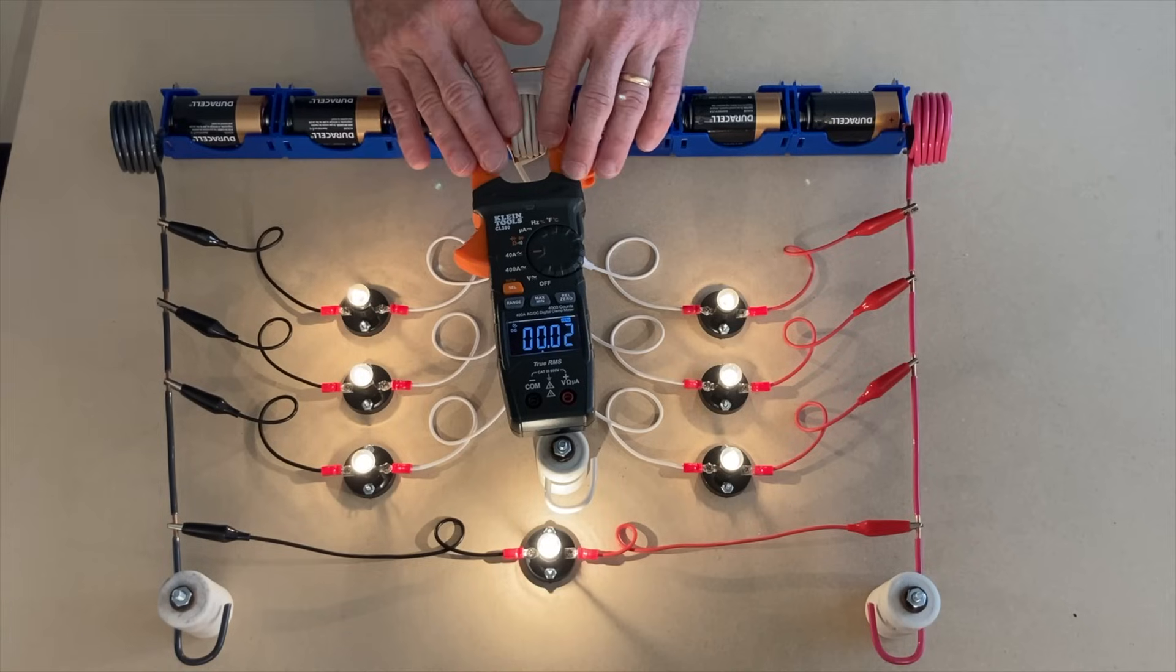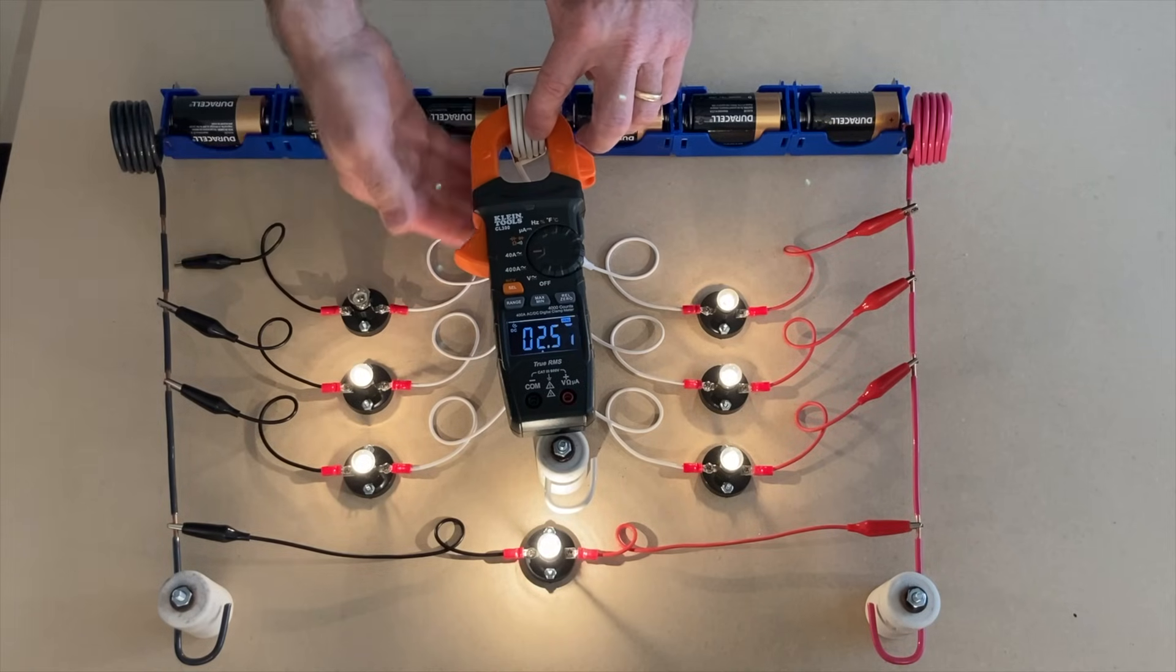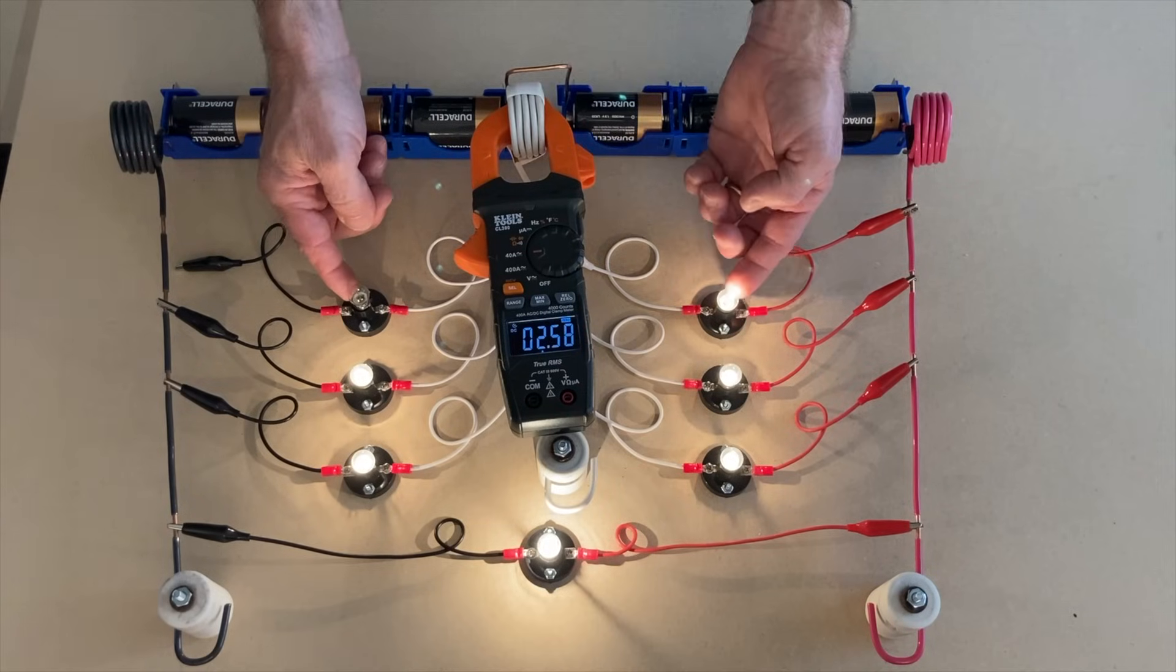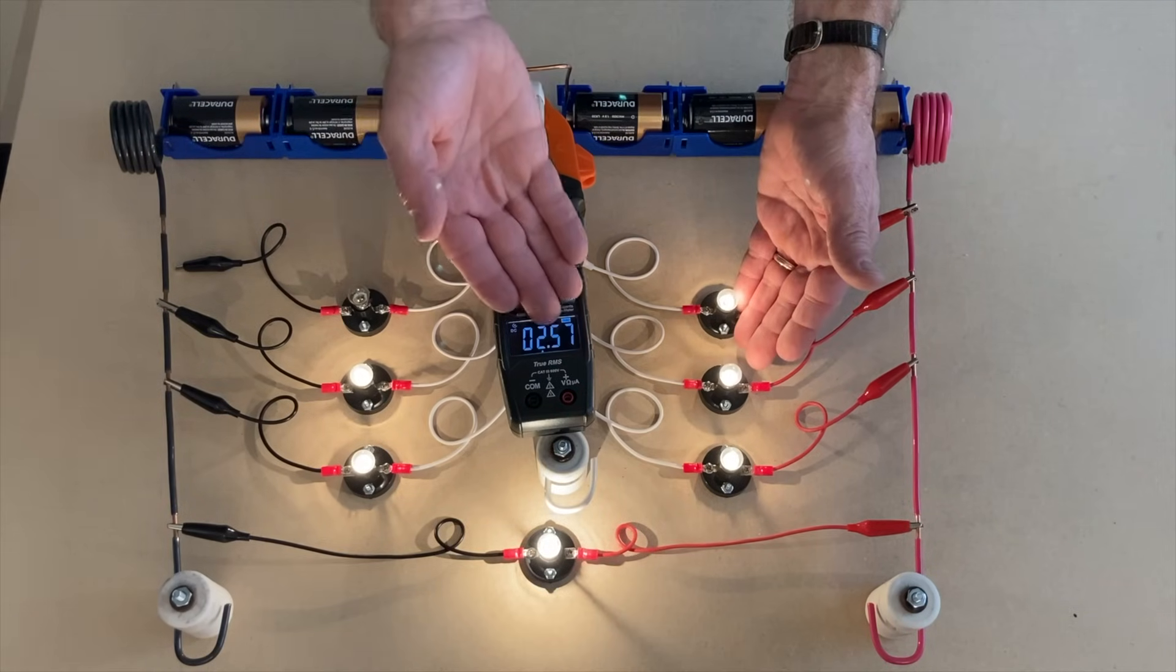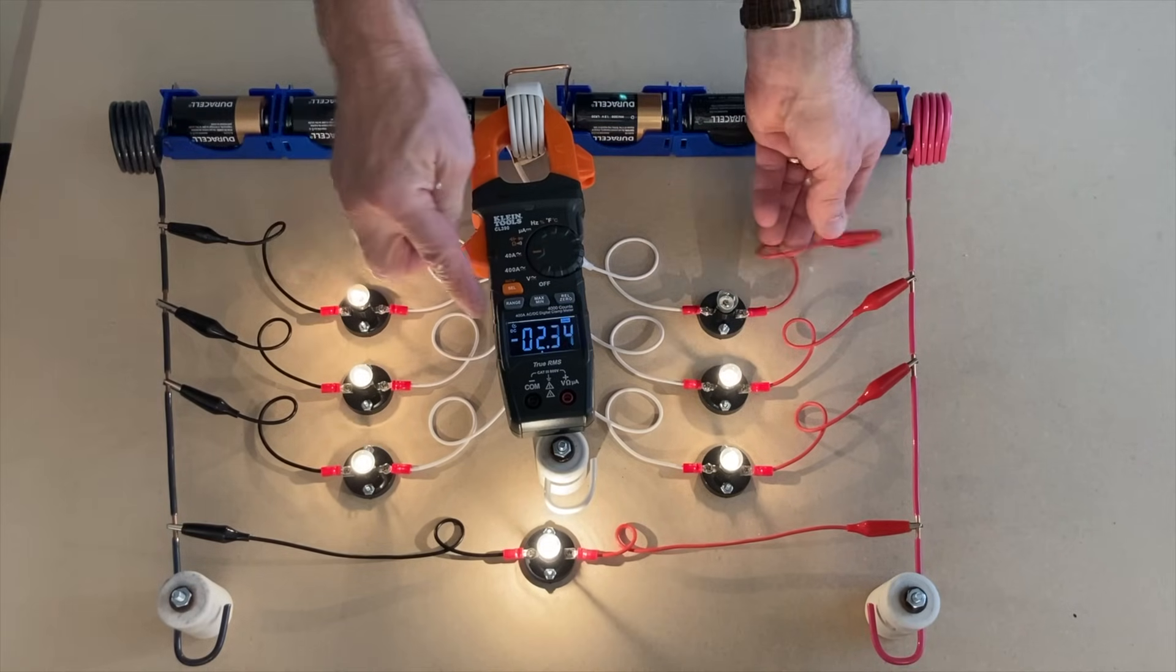The only time the neutral should be carrying a current is when we are, at least on this portion back to the source, if we are unbalanced. So here this side is heavier and it's a positive two and a half amps. But when this side is heavier, it will be a negative.